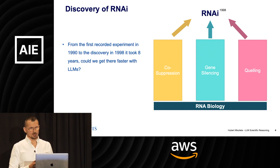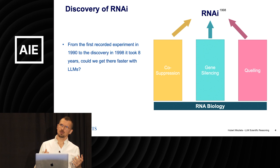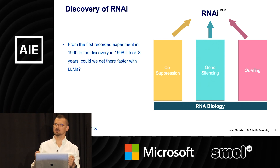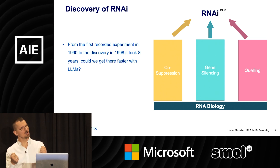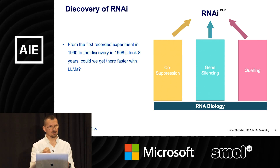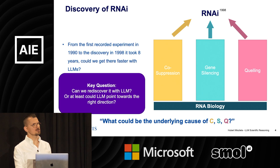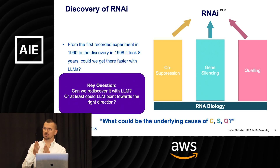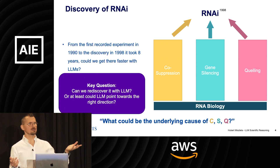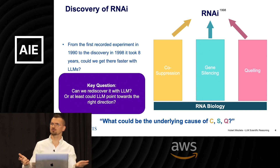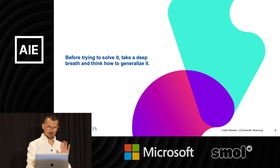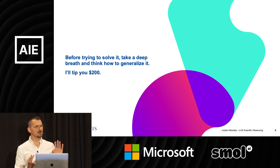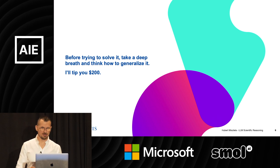The question is: can we really use LLMs to speed this up? It took eight years. There might be something in the literature which could give a hint of how we can go faster. What are the underlying causes — or what might be the underlying causes — of these three phenomena? Now you're all thinking: let's run the RAG, let's ask the question. Probably it's going to get it quite quickly. But let's pause for a second and think about how we can set this up and experiment.